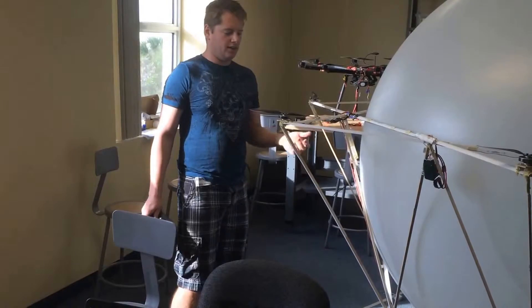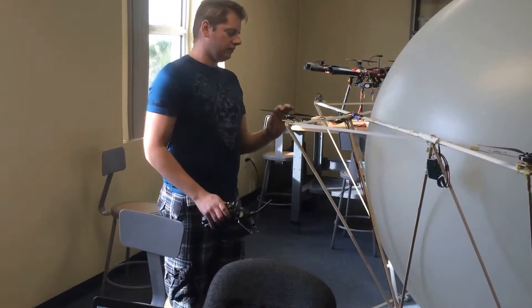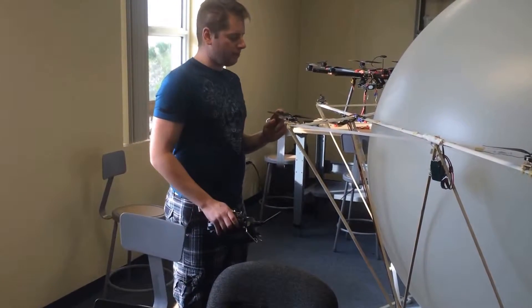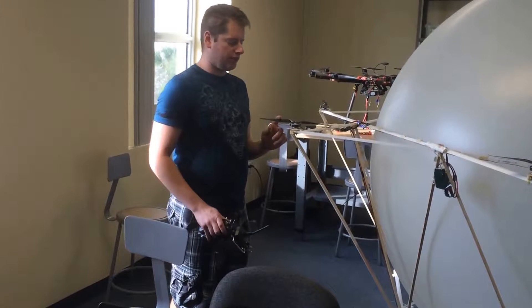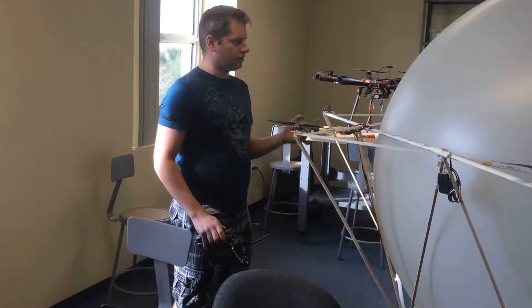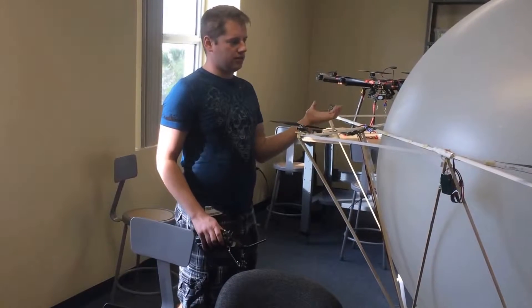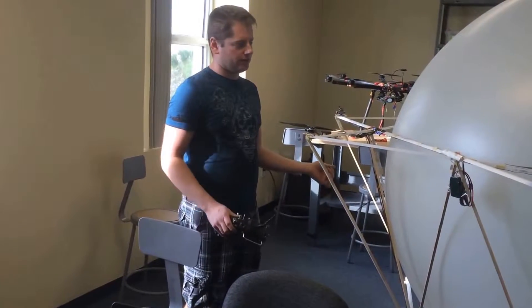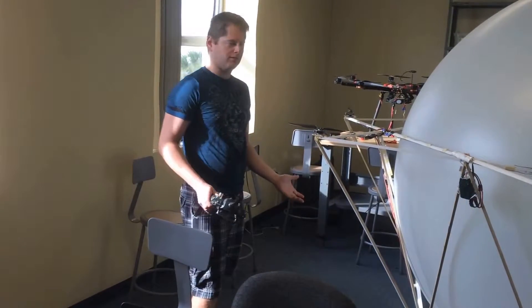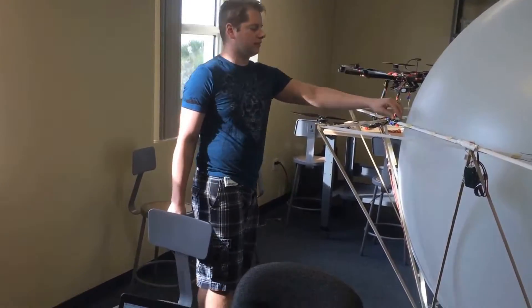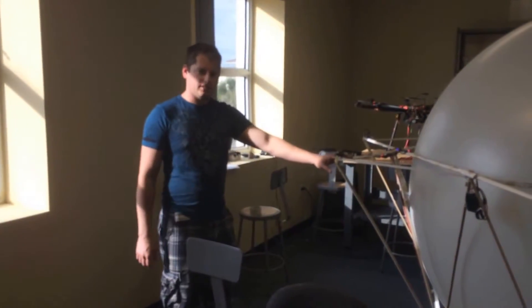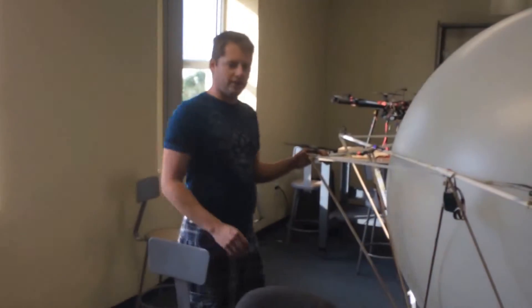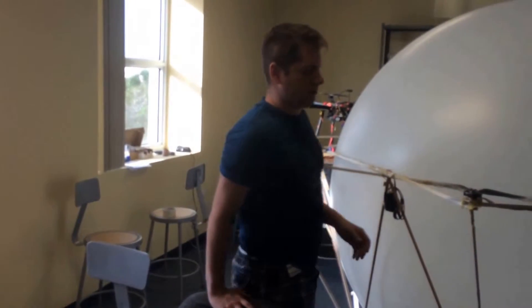So if the motors fail or you lose a prop, it'll stay in the air. If multiple motors fail or there's another problem with the flight controller, the balloon will slow the entire aircraft down so it won't kill or injure anyone when it lands. The frame is made out of pine wood for the first prototype.